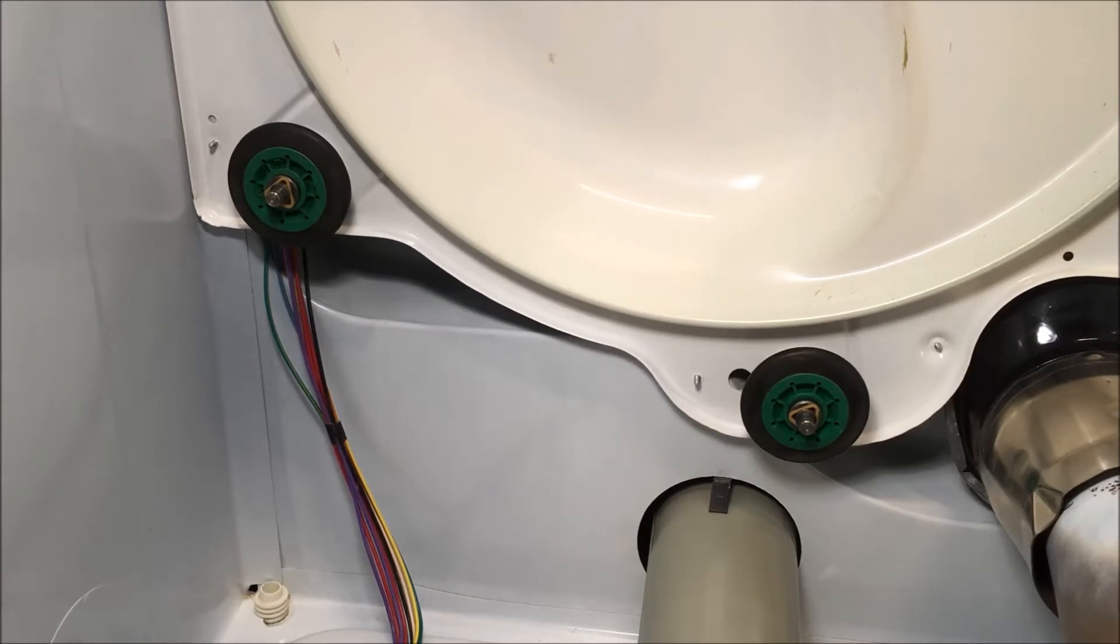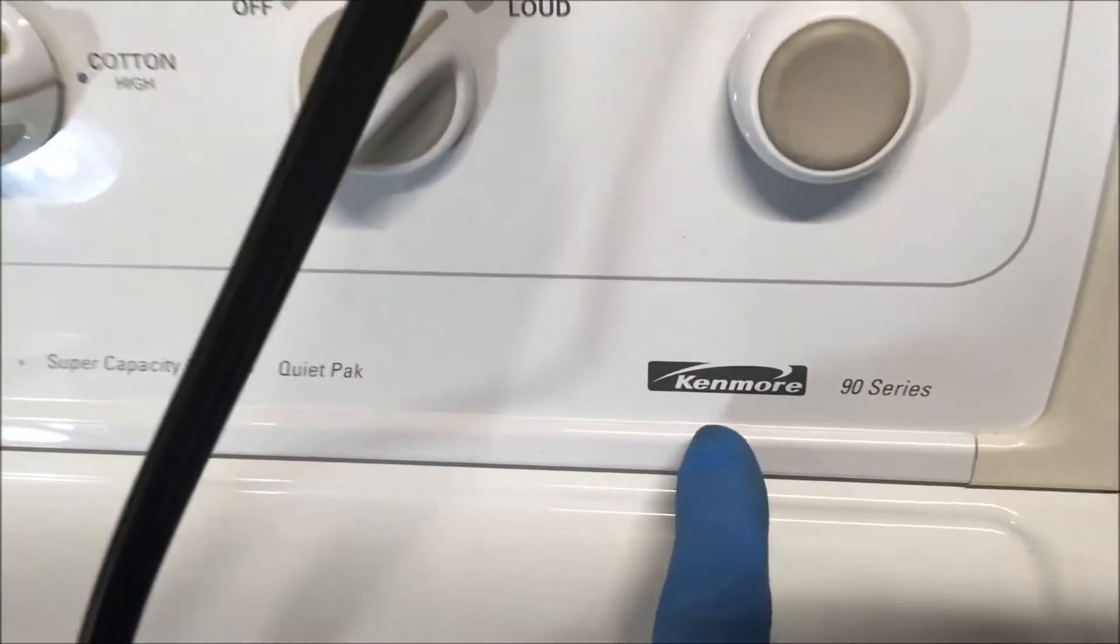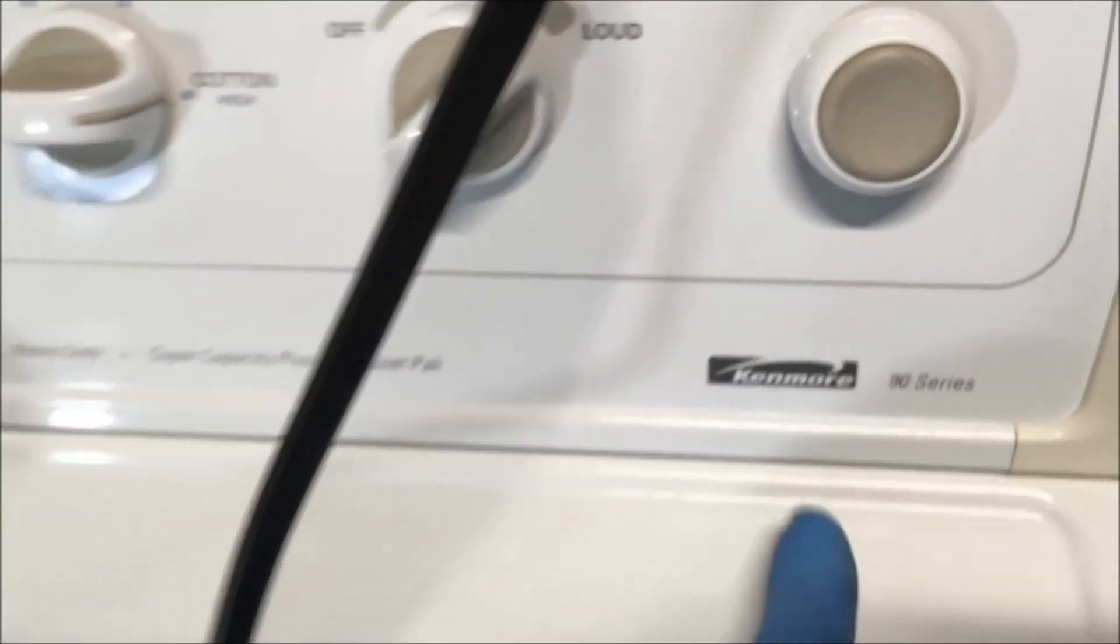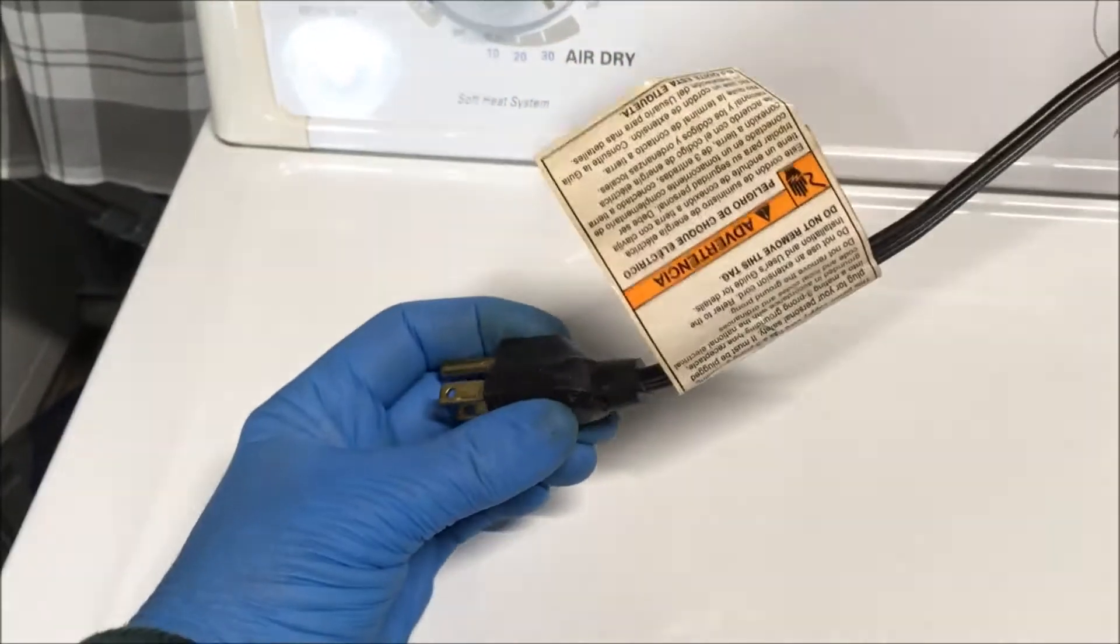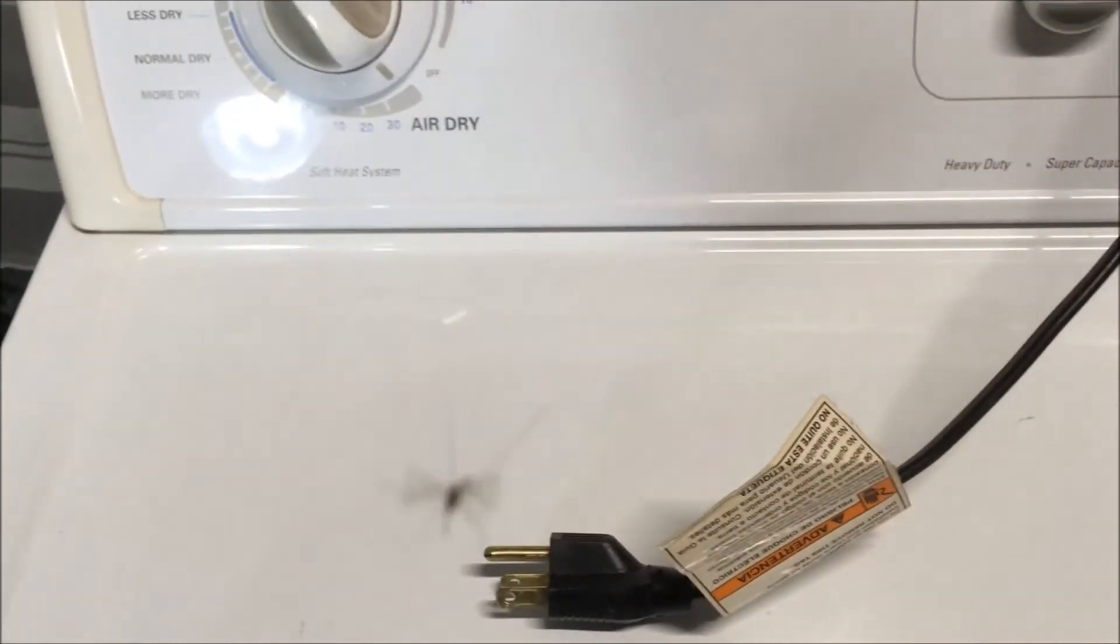The rollers need to rotate or spin freely so that the drum can properly turn. Those rollers support your drum. This is a Kenmore 90 series gas dryer. You want to unplug it before you start working on it and turn off the gas.